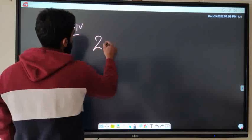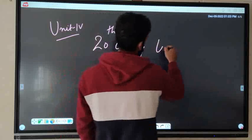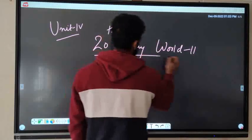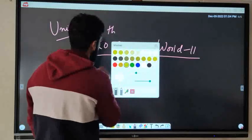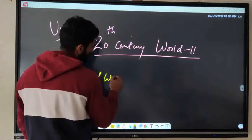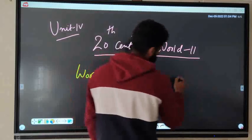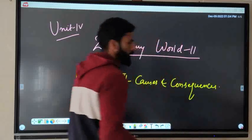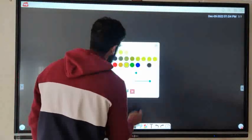Coming to unit four, that includes 20th Century World Second. The important question in this unit is World War Second — causes and consequences. This was all about the guest paper of Thesis of World Civilization.